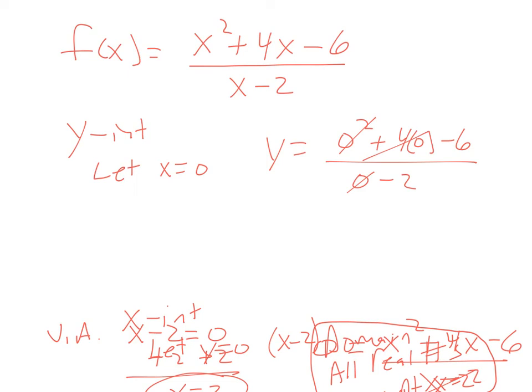So really I have y equals negative 6 over negative 2. So therefore y is equal to 3. And I let x be 0 and I got y to be 3. So the y-intercept is at 0, 3.